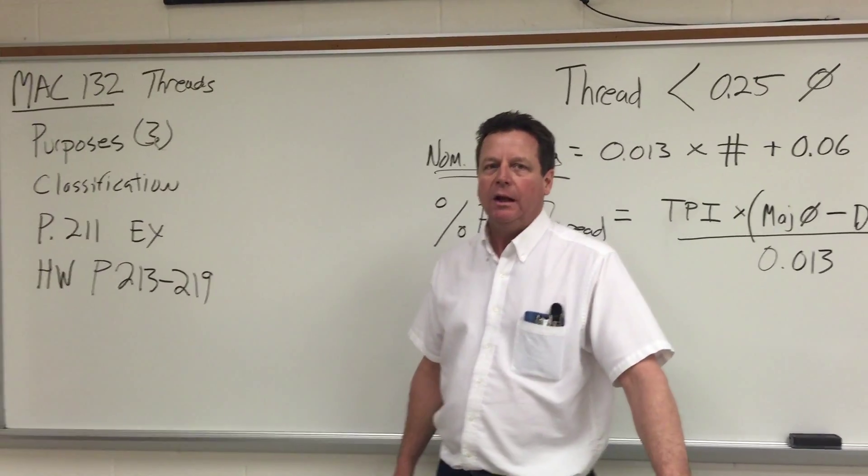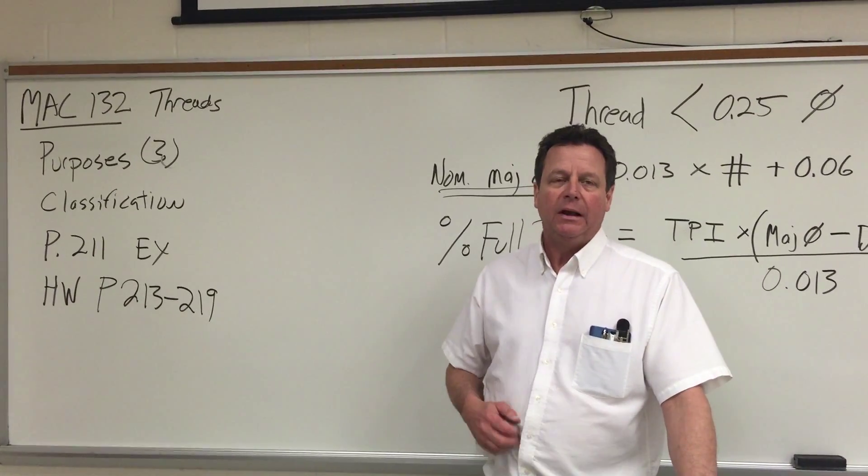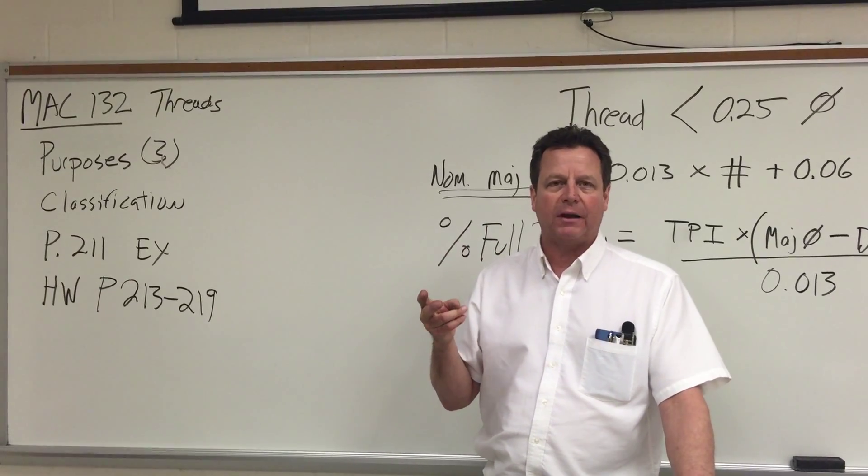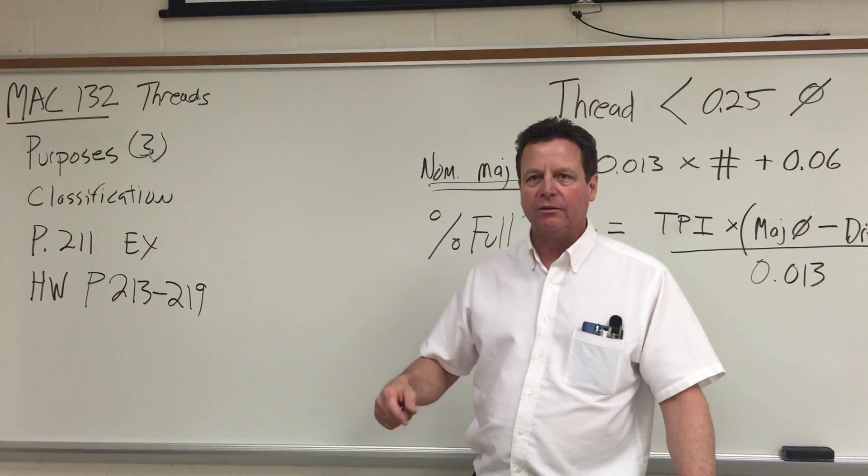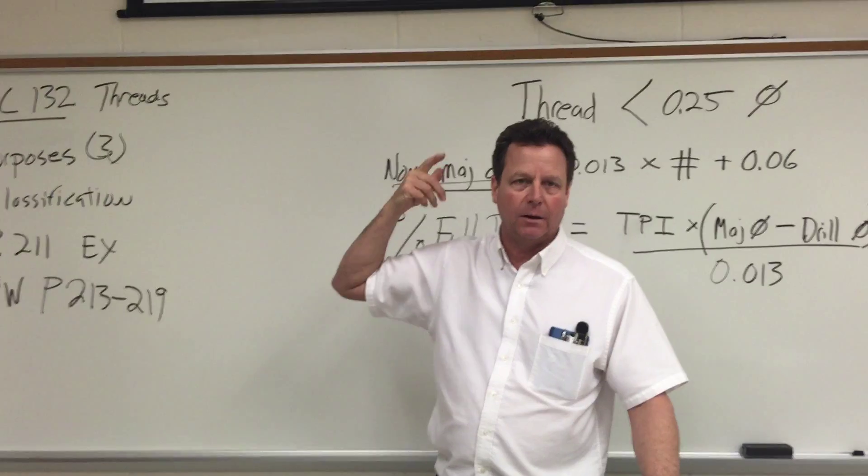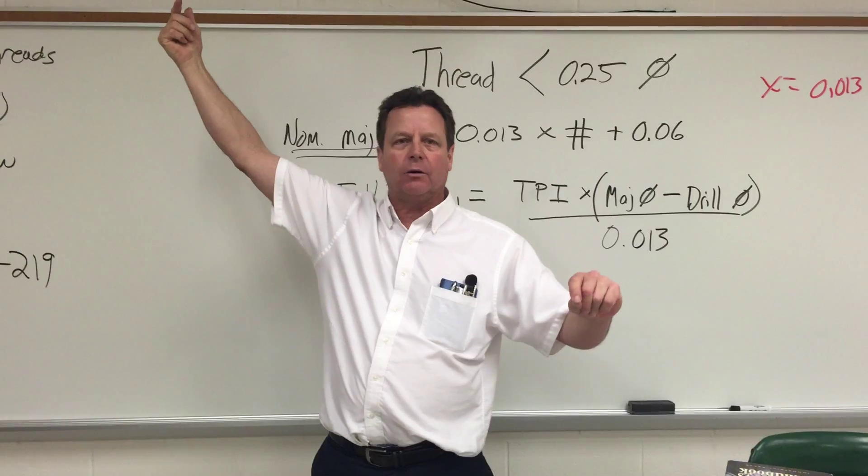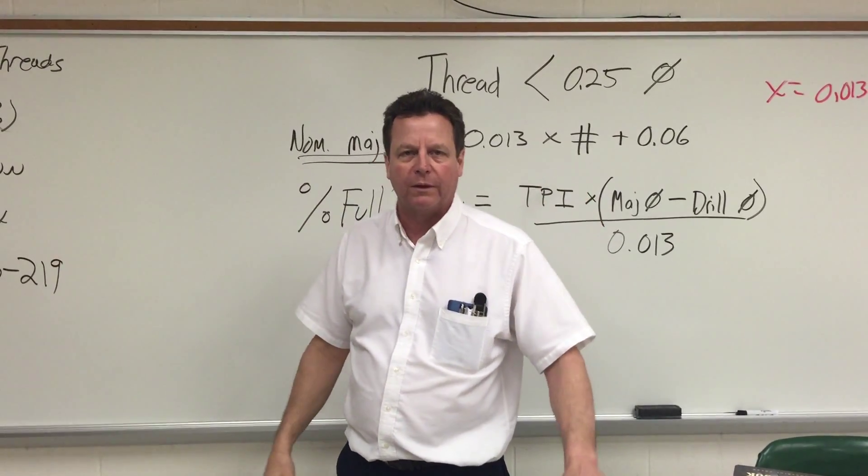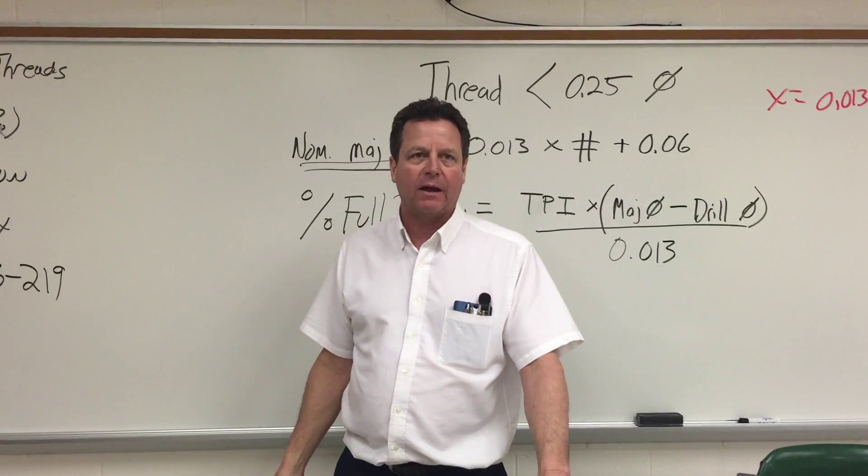Threads have to be cut properly and maintained properly. There are only two ways that threads can fail. They can either strip, which means—just like on that Alaska Airline Crash—one thread just rips out of the other. You can see that file on the Blackboard page. It looks like a ribbon because it just stripped off of the bolt or the nut.